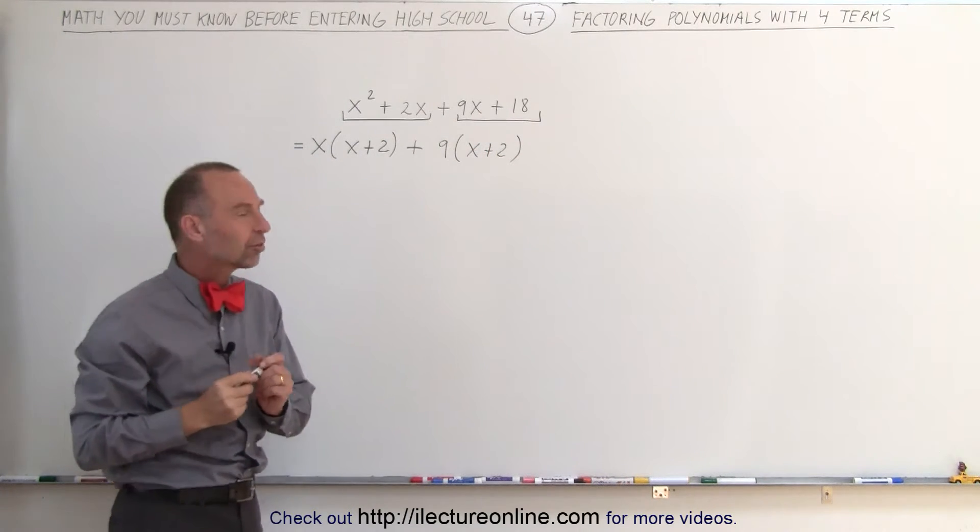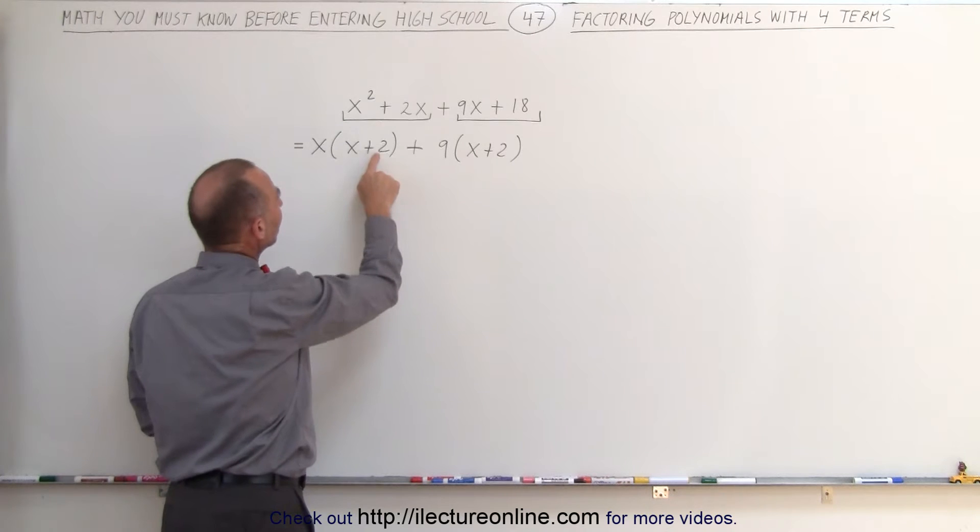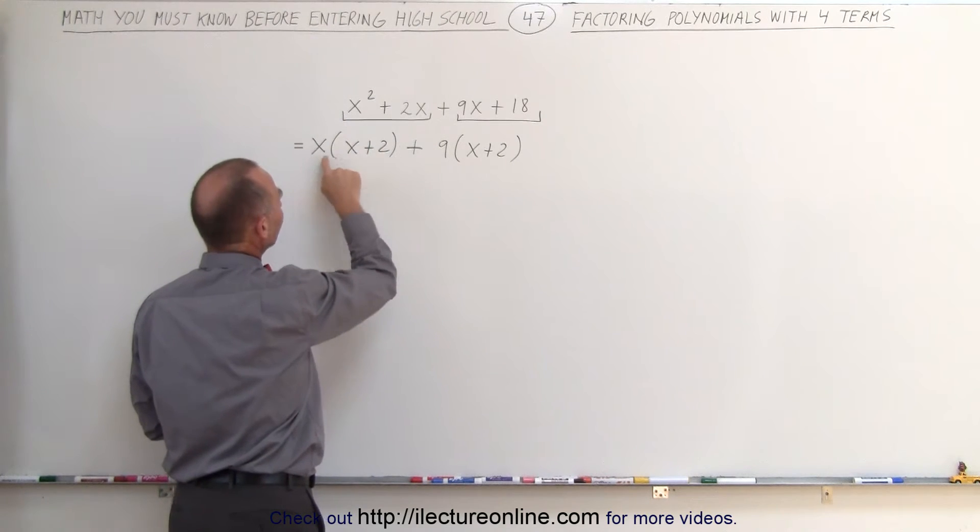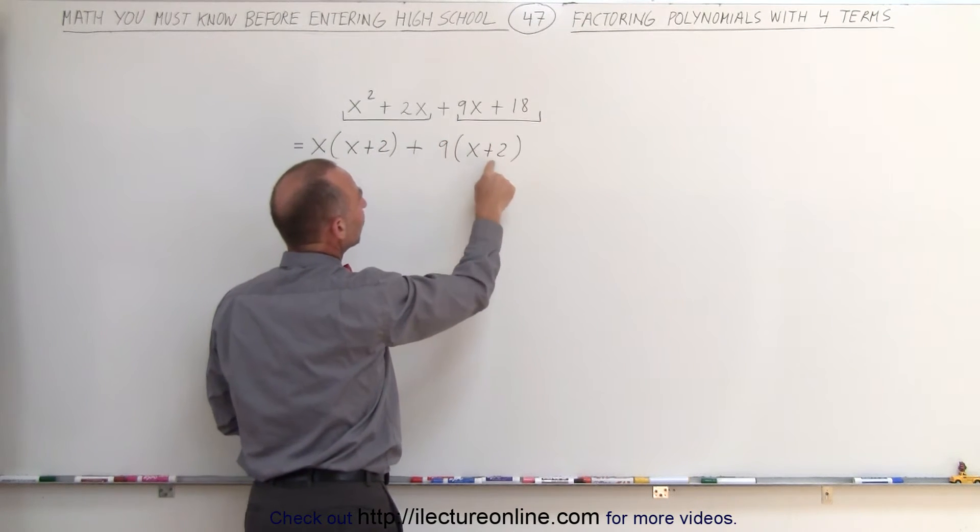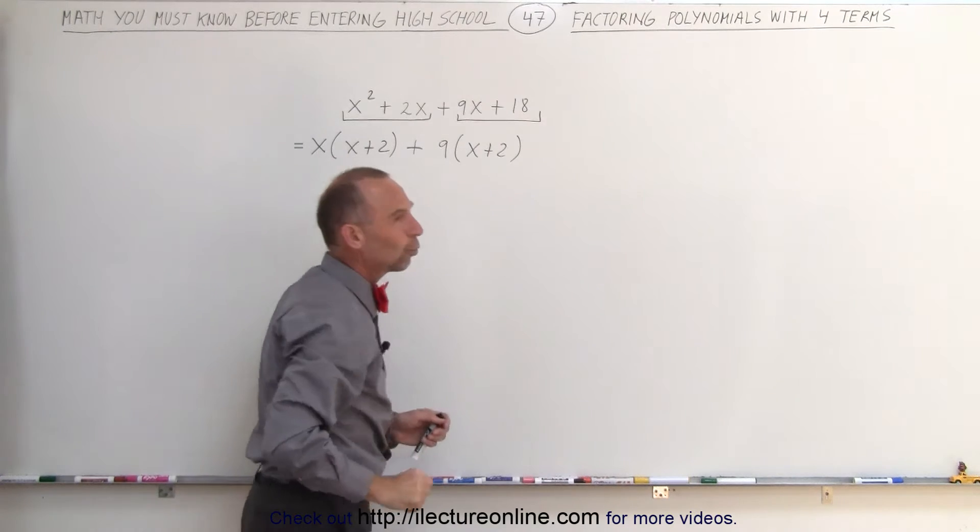Always quickly to see if we did this correctly, you can multiply this back in and see if you get what you started with. x times x is x squared. x times 2 is 2x. So that's correct. 9 times x gives me 9x. 9 times 2 gives me 18. So that's correct as well.